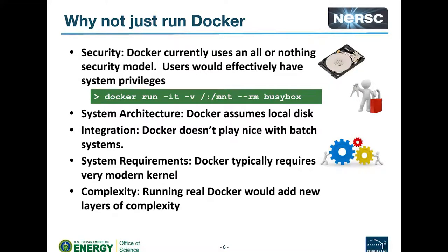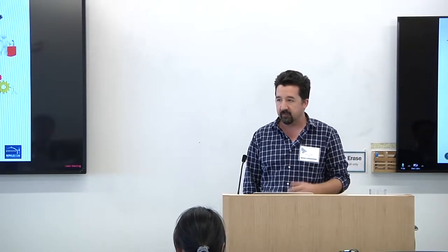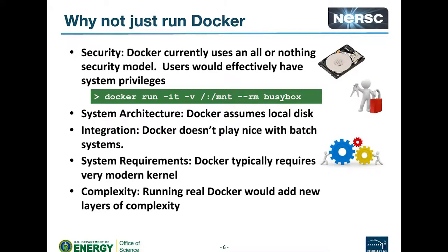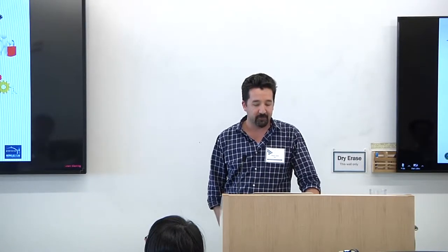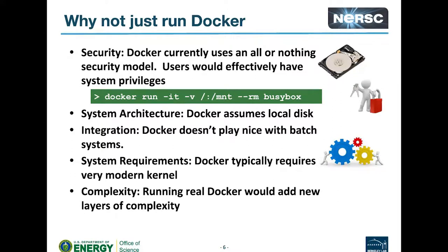Docker has this all-or-nothing security model. If you ran Docker on Cori, you would basically have system-level privileges — you'd be like root on a supercomputer, which isn't good. It also assumes there's a local disk, and our compute nodes don't have a local disk. Docker doesn't play nicely with batch systems. Docker typically requires a much more modern kernel, which places a burden on system administrators. Real Docker would also be a lot more complex than running Shifter.